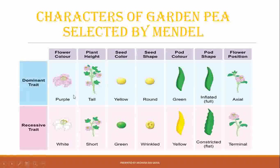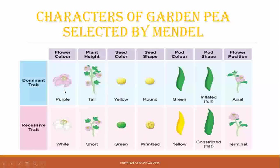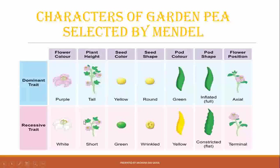An important point: a plant bearing purple flowers will only bear purple flowers, and one bearing white flowers will only bear white. So among pea plants, we see two types. When carrying out experiments, Mendel selected plants with contrasting traits — one with purple and one with white, or a tall plant and a dwarf plant. He carried out experiments with all seven characters separately, considering one at a time. These experiments are called monohybrid experiments.